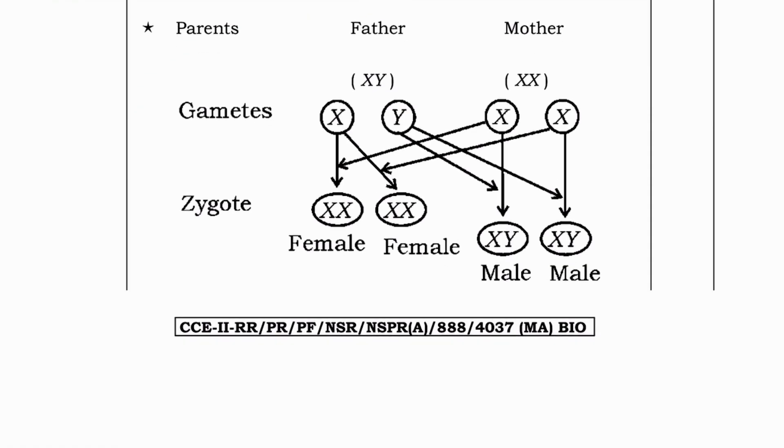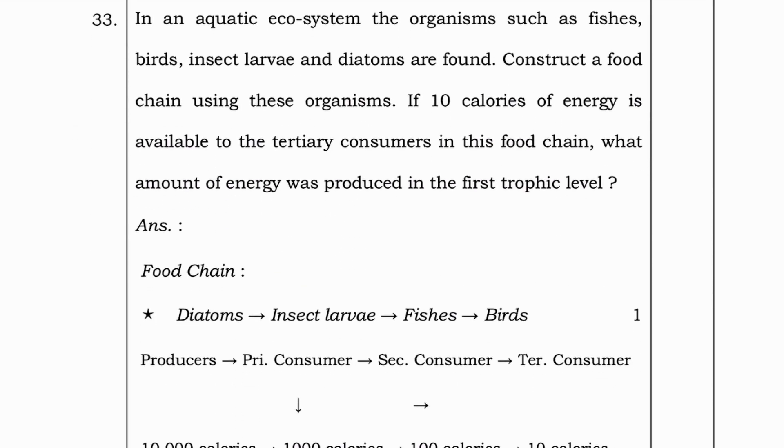Or they have given another explanation here. Where parents, father and mother, see here X and Y. Here XX which are mother's gametes. XX means female child and XY means male child.